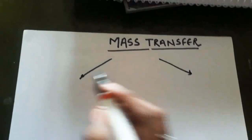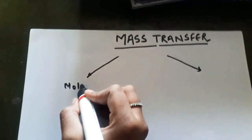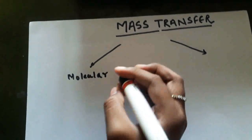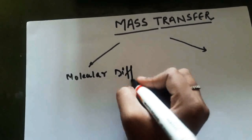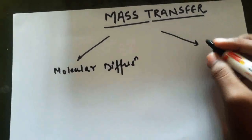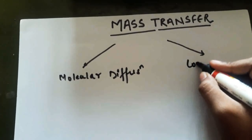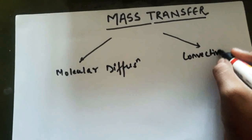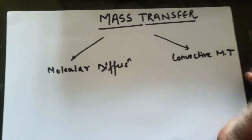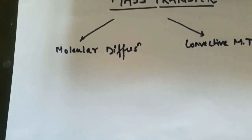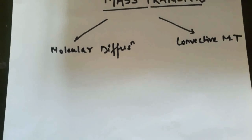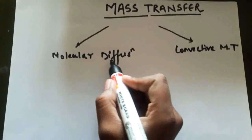Mass transfer is classified into two types: the first one being molecular diffusion and the second one being convective mass transfer. The question arises: what is the difference between these two?